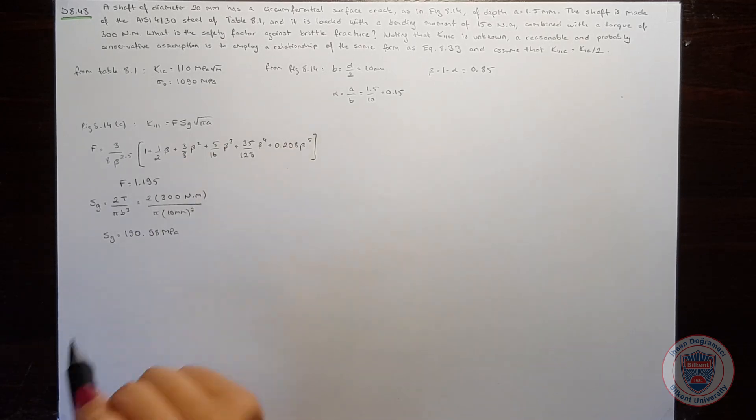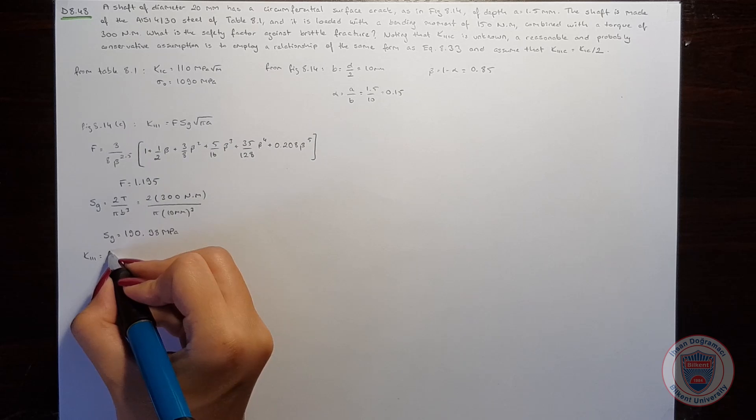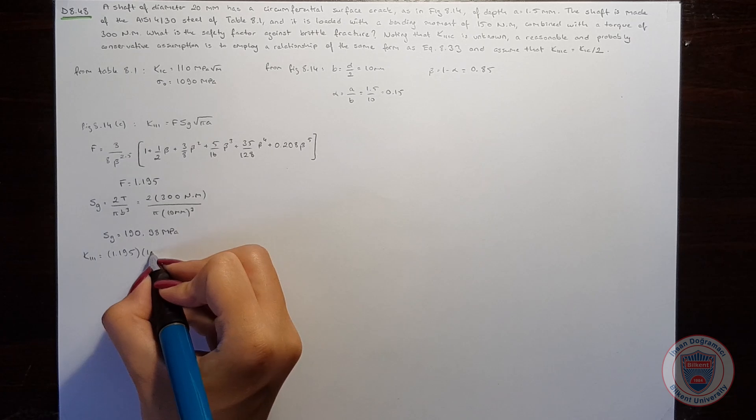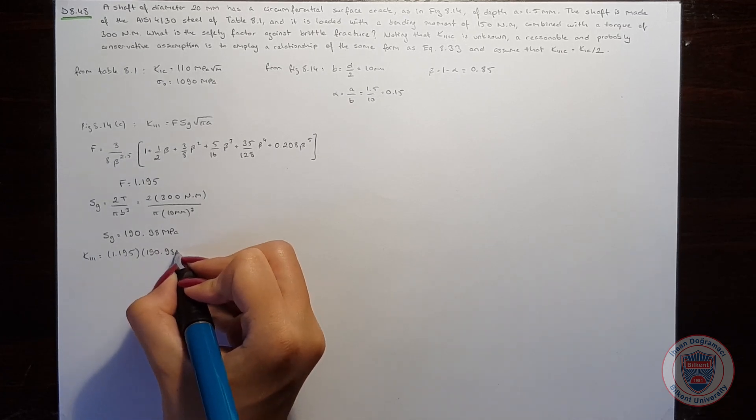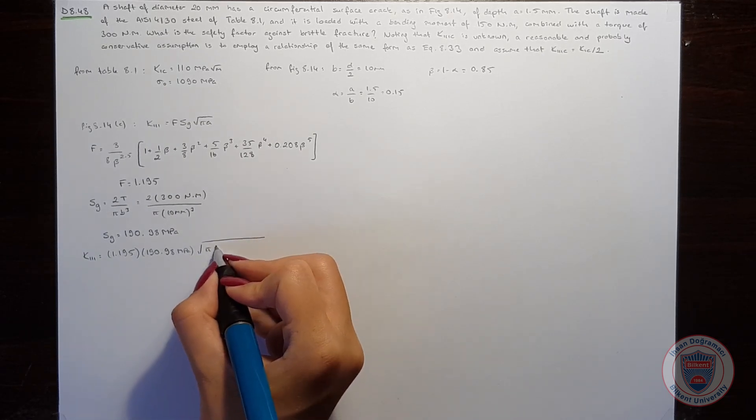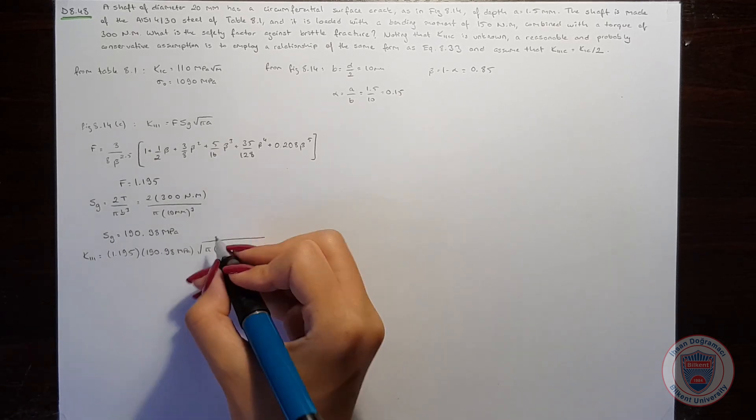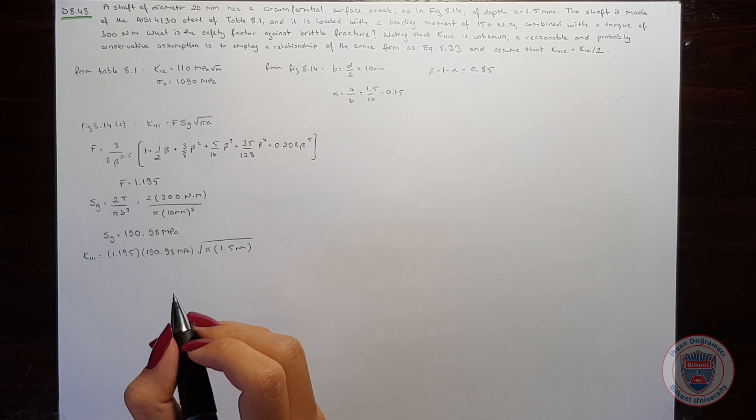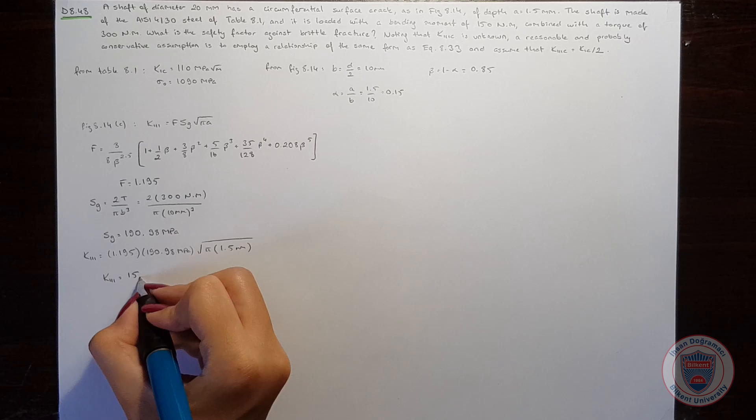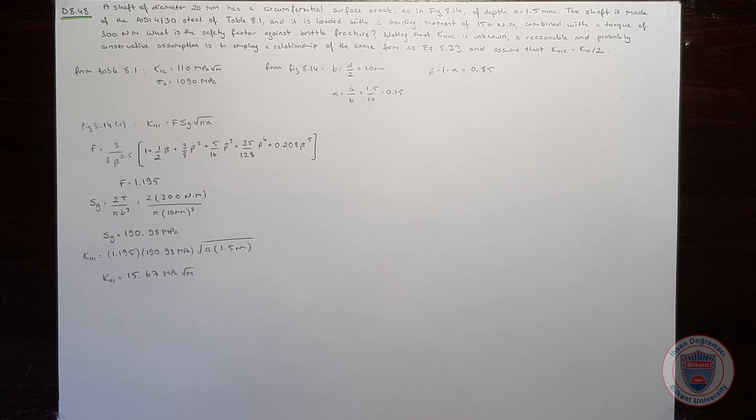Since we calculated F and Sg, we can now calculate K3. K3 equals 1.195 times 190.98 times the square root of pi times 1.5, giving us K3 equals 15.67 MPa square root meters. Now let's calculate K1.